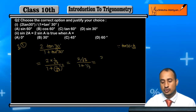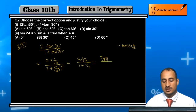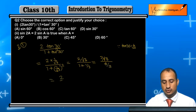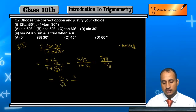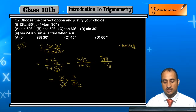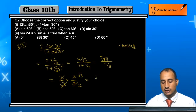Further solving: 2/√3 upon (3+1)/3, that is 4/3. So we get 2/√3 × 3/4, and the 2 and 4 cancel — 2 cancels out, giving us √3/2 after simplification.